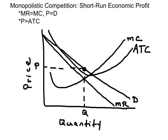Here is a firm earning short-run economic profits. It looks very similar to a monopoly. We have our axes labeled price and quantity, our marginal cost curve looking somewhat like a checkmark, demand, and marginal revenue downward sloping below the demand curve. We use the MR equals MC rule to determine output, and then the price is on the demand curve. This is a short-run economic profit because the price exceeds the ATC curve at the MR equals MC output level.